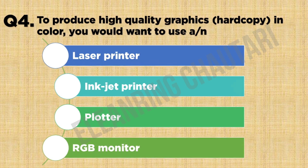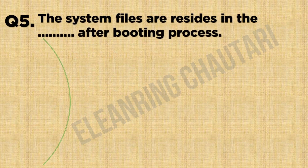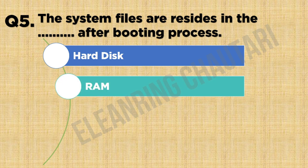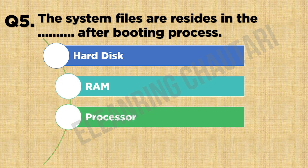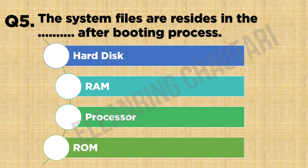Question 5: The system files are stored in the — after booting process. Option A: hard disk. Option B: RAM. Option C: processor. Option D: ROM. The correct answer is Option B: RAM, because the system files are stored in RAM after the booting process.